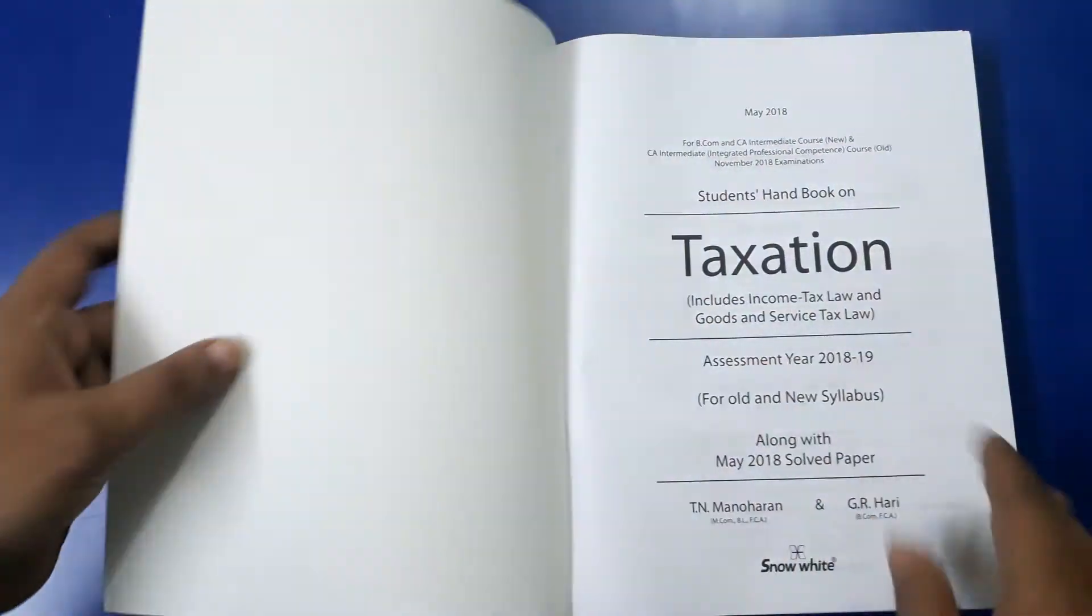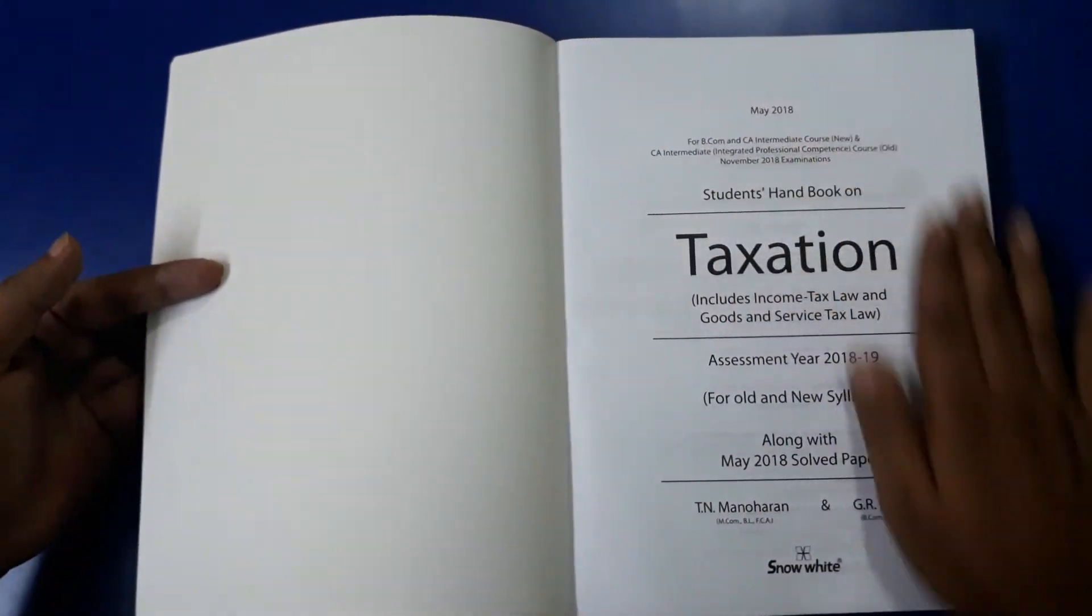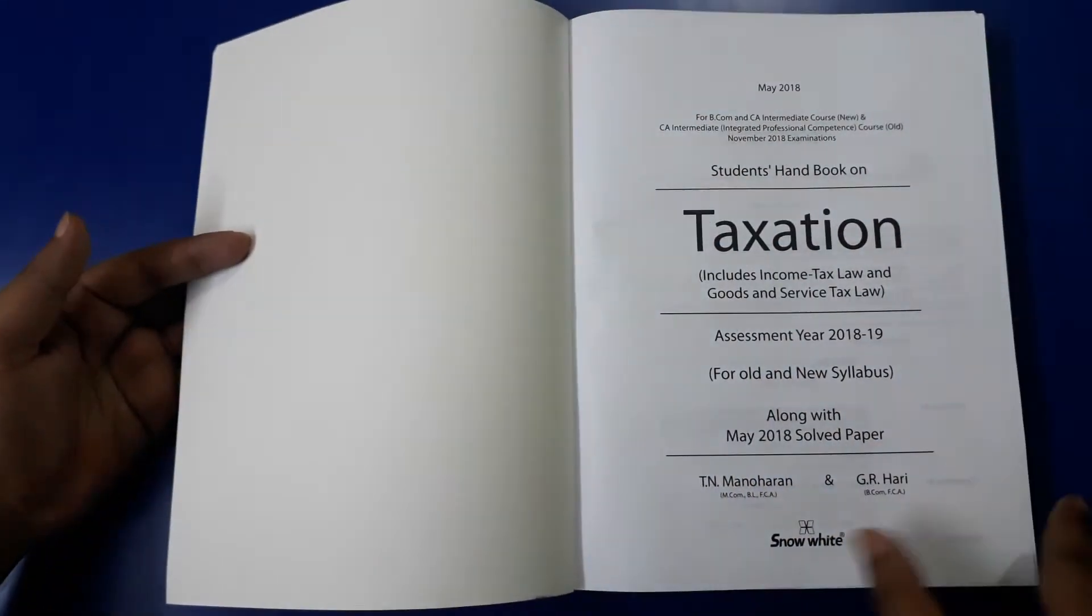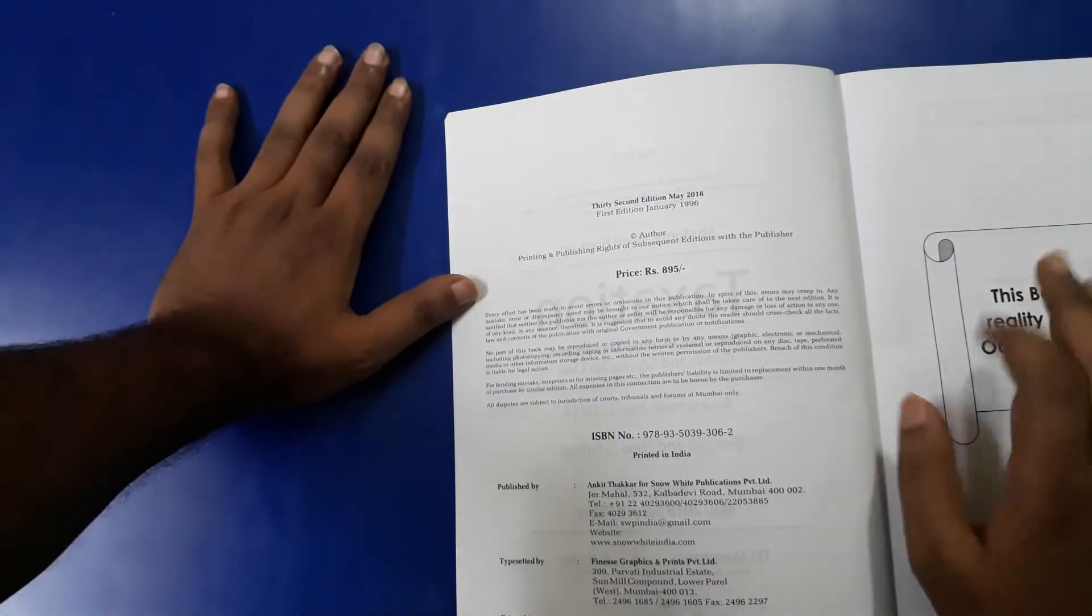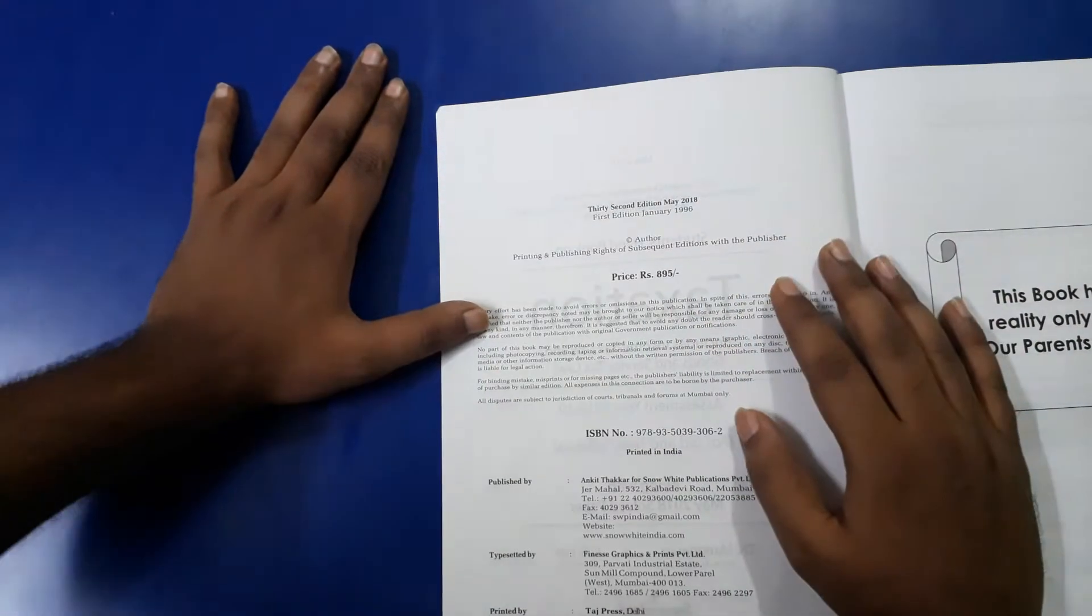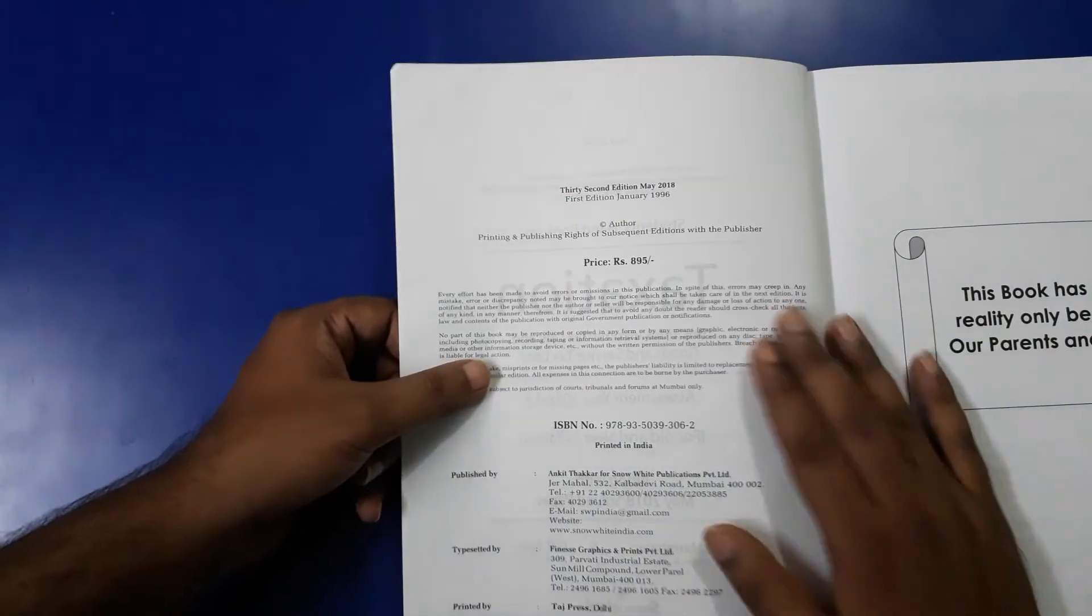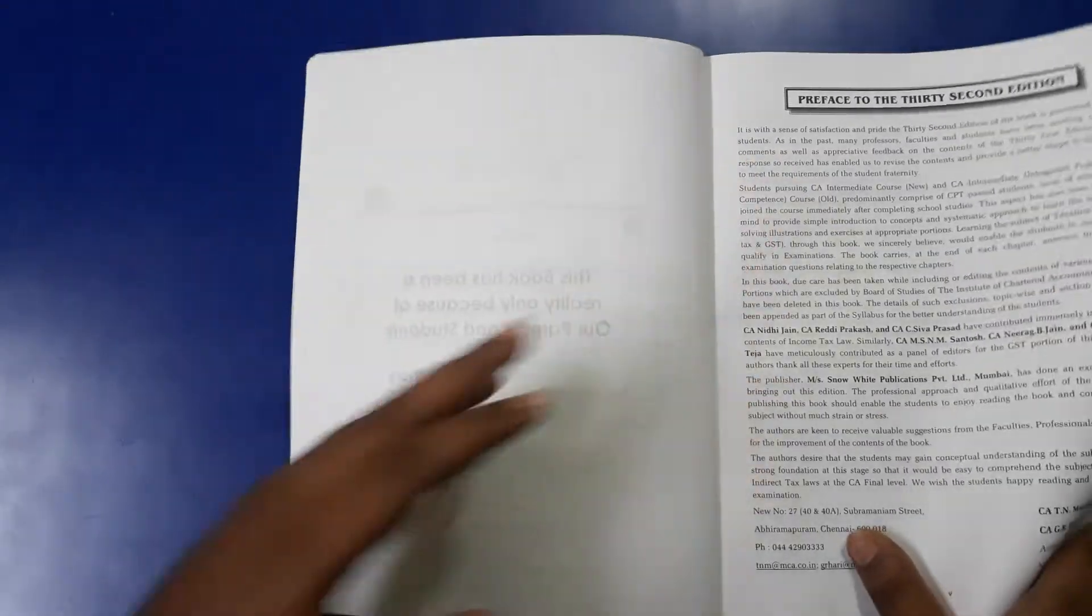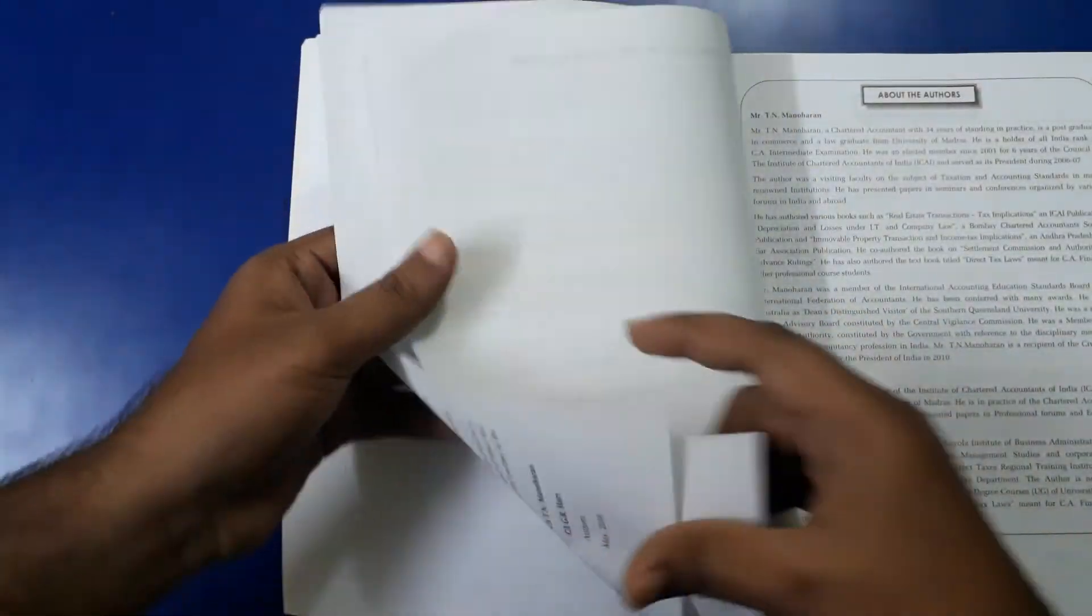Let us discuss the inside content of the book. So first, the first page of the book. After this, you will see the MRP of the book, that is 895 rupees. This is the 32nd edition and it is useful for November 2018 exam.